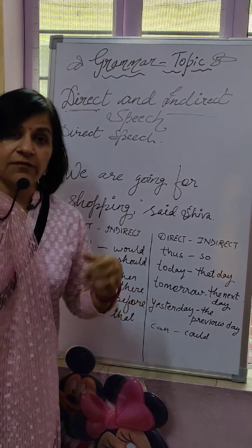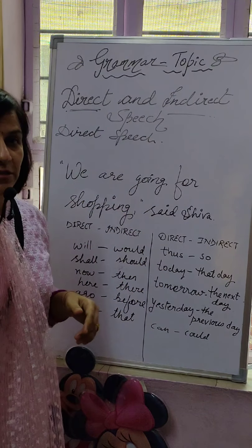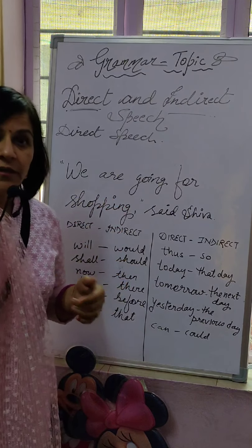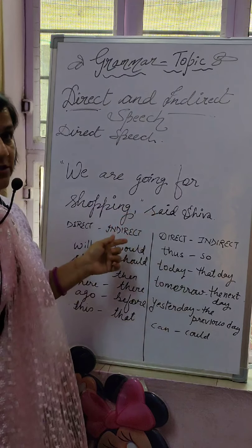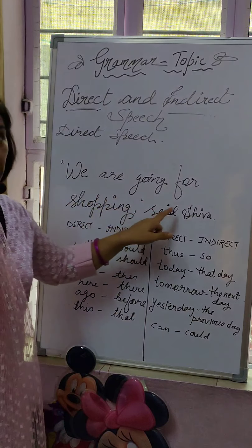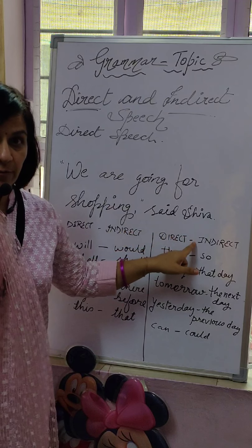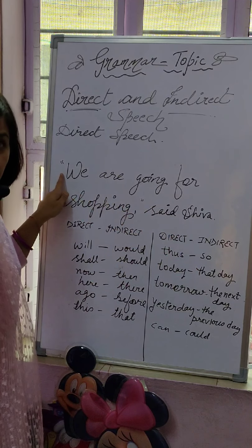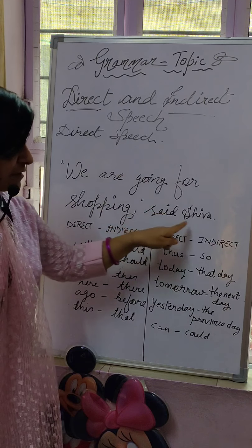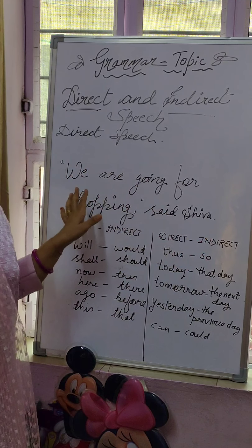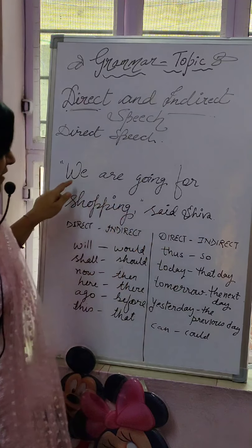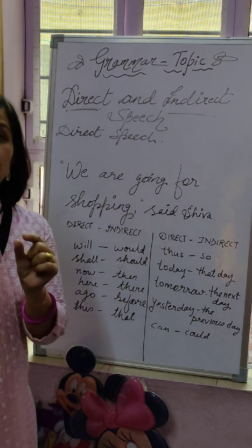When we change this into indirect speech, we will make some changes in the sentence. We tell someone what Shiva said — that is indirect speech. Here you notice, children, there is a double inverted comma at the beginning, and a comma and double inverted comma closing at the end, followed by 'said Shiva.' The reporting verb can be at the beginning or at the end.